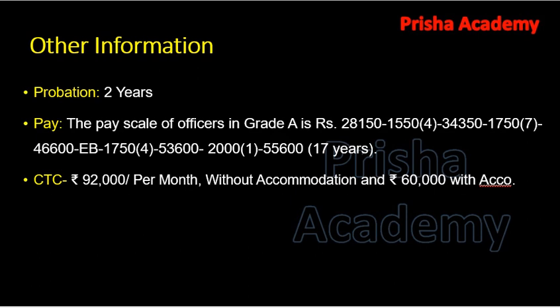The probation period for Grade A officers is two years. The pay scale is 28,150 basic pay with 1,550 increments. The CTC offered by SEBI is approximately 92,000 per month without accommodation or 60,000 with accommodation. Notably, SEBI provides around 30,000 to 40,000 rupees as accommodation allowance — around 35,000 for Grade A and 45,000 for Grade B — without requiring any rent receipts, which is unique among government institutions in India.